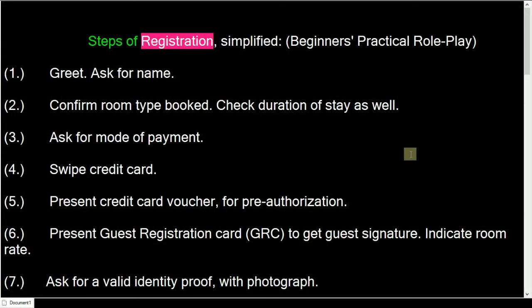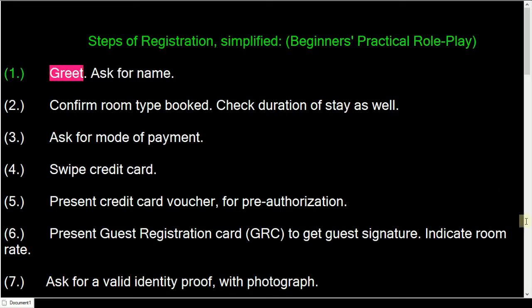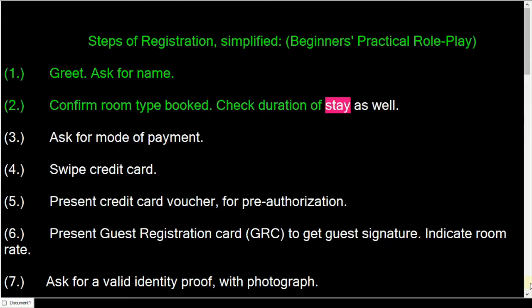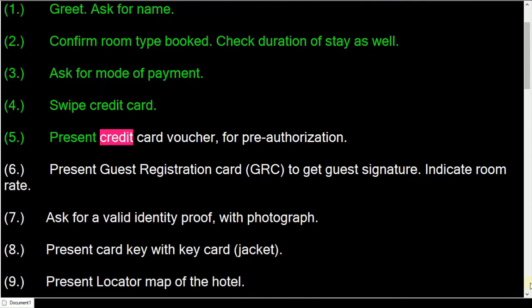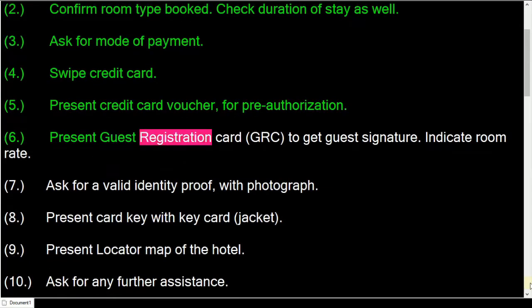Steps of registration simplified: ask for name, confirm room type booked, check duration of stay, ask for mode of payment, swipe or present credit card, present credit card voucher for pre-authorization, and present guest registration card to get the guest's signature.